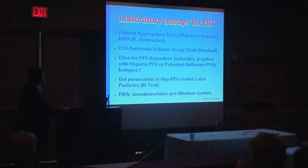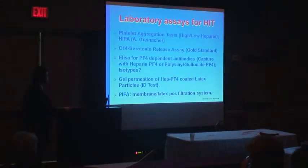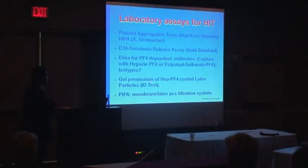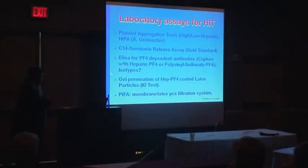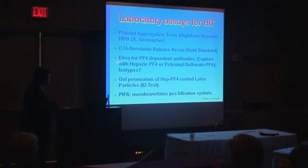The second group concerns the different immunoassays, which were developed when PF4 was identified as the major antigen for binding heparin-dependent antibodies. The basic original test uses PF4 complex with heparin for capturing heparin-dependent antibodies. A variant developed shortly after uses polyvinyl sulfonate for binding to PF4, because there was a patent on the original assay preventing use of heparin and PF4 for capture.